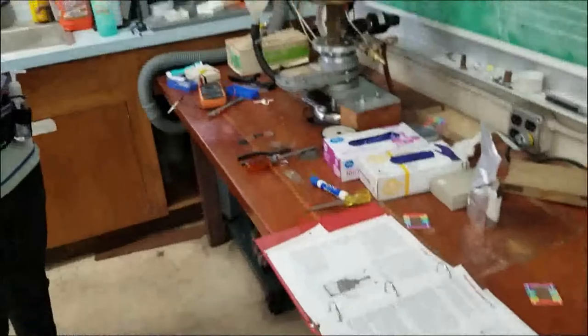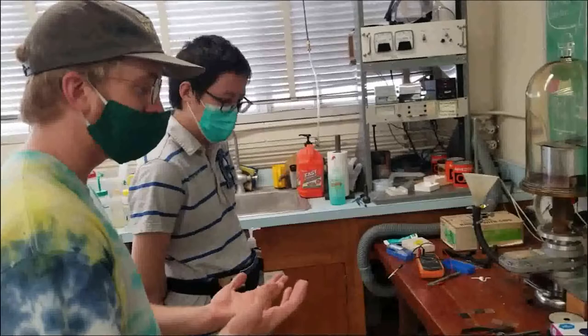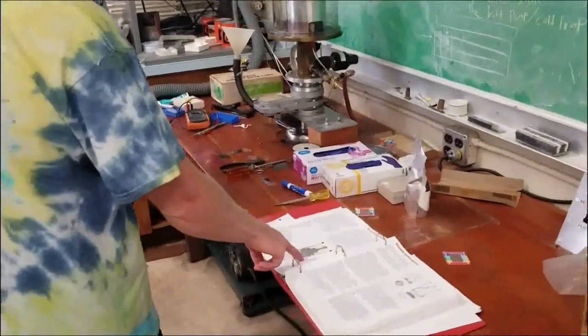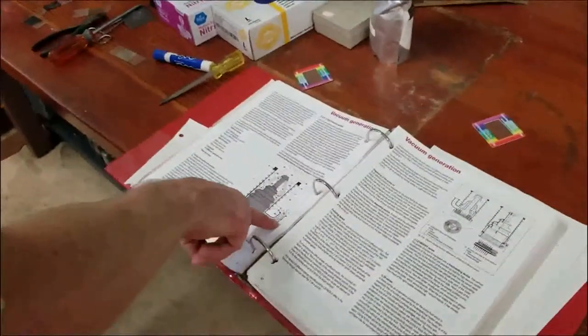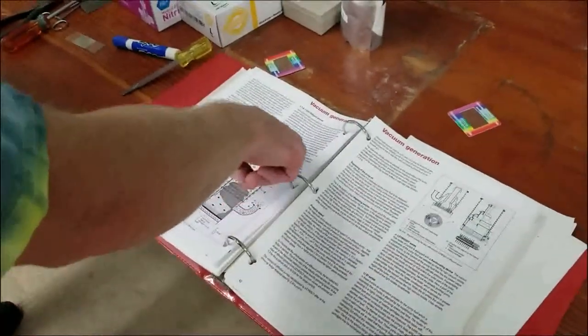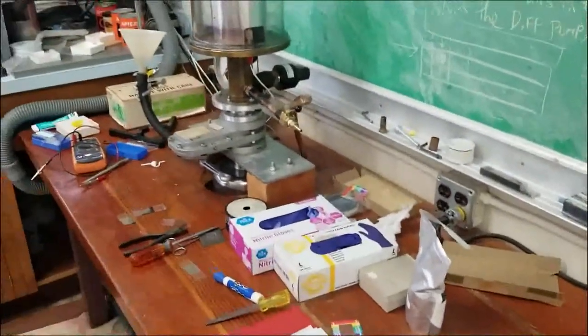So the only real limit to the diffusion pump is you have to turn it on at really low pressure because otherwise it won't move very much gas in terms of volume. And you can't let the pressure build up too high over here. If the pressure builds up too high over here, it shoots the oil up and it will get inside our container and contaminate it.